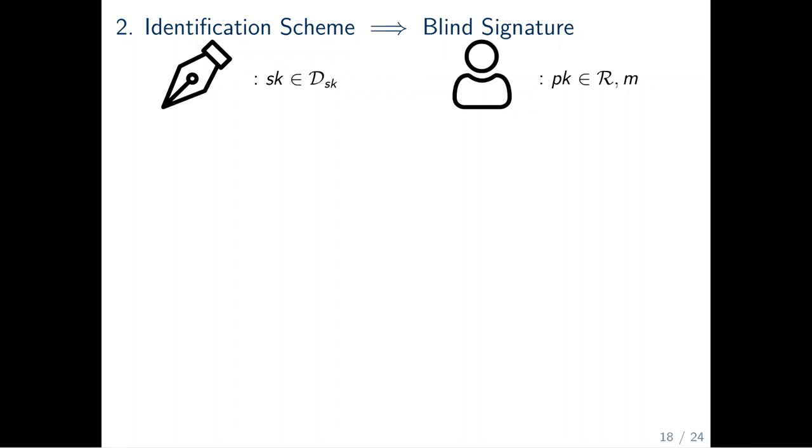Now, for the second part of our framework. Here, we turn linear identification schemes with correctness error into linear blind signature schemes with correctness error. The keygen algorithm stays the same. The signer side stays also the same, so we can safely ignore that for now. But the user's side changes significantly. Instead of drawing a challenge uniformly at random, the user proceeds as follows.